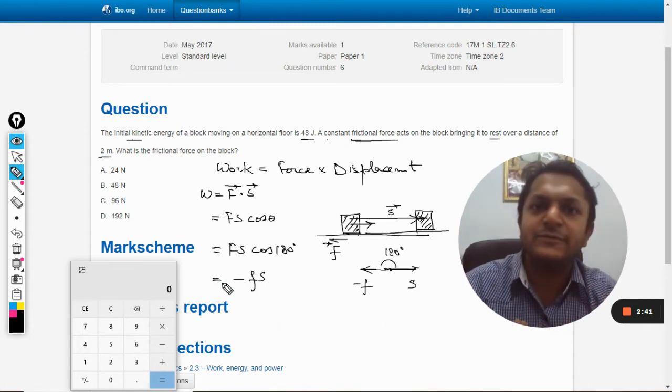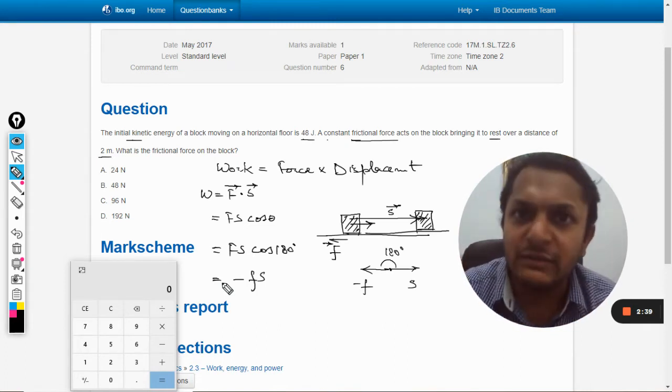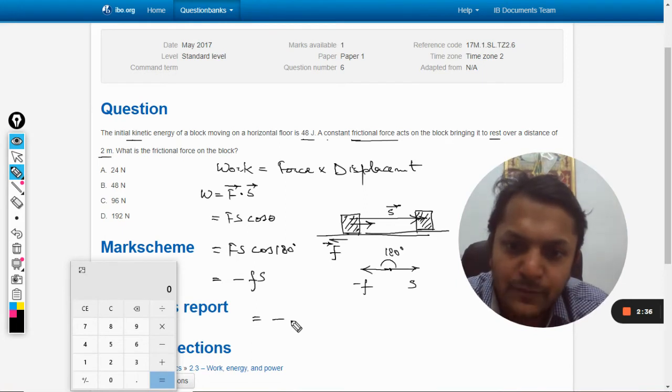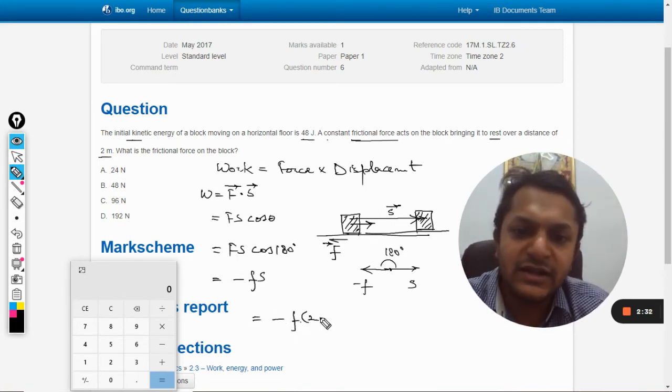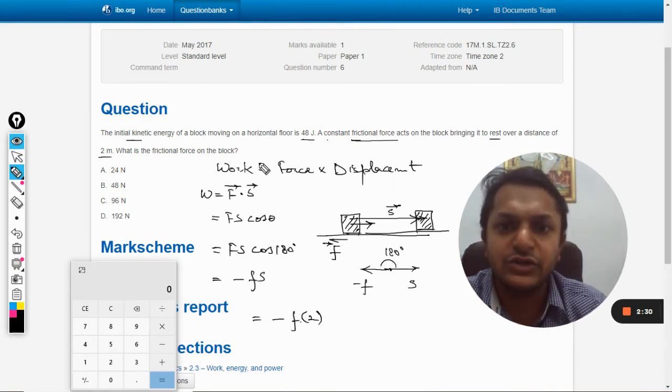So W = -Fs. F is the friction that is acting, displacement is 2 meters as given in the question, and the total energy is 48 joules which has been lost. This means the work that was done...